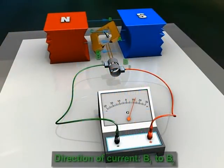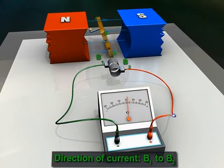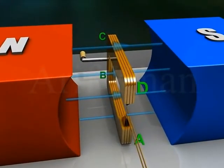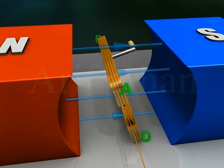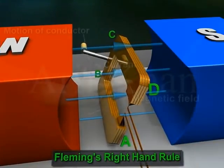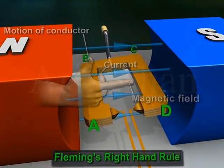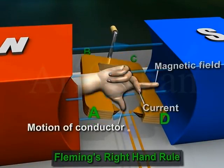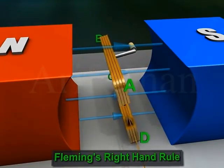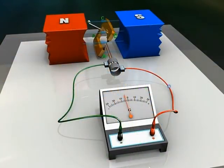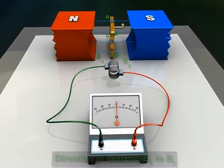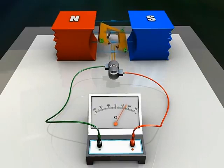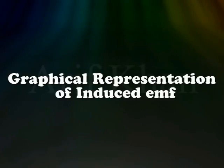So the current will flow from B1 to B2 through the galvanometer. During the next half rotation, arm AB moves up while arm CD moves down. By Fleming's right-hand rule, current will flow in the direction ABCD, that is from B2 to B1 through the galvanometer. Thus the induced current changes its direction every half rotation.